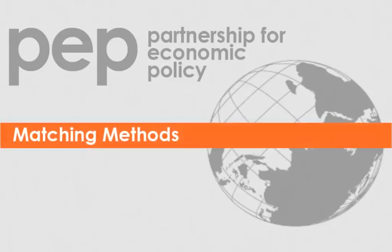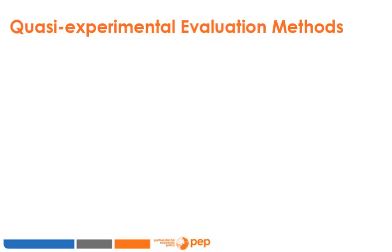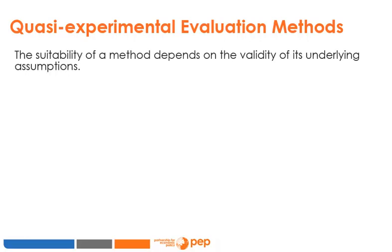This module is about a quasi-experimental evaluation method called matching. We have discussed a number of experimental and non-experimental approaches to estimating the impact of a program. When evaluating a program impact, we must always ask: what is the best method to evaluate this program? The suitability of a method for measuring the effect of a treatment depends on the validity of its underlying assumptions.